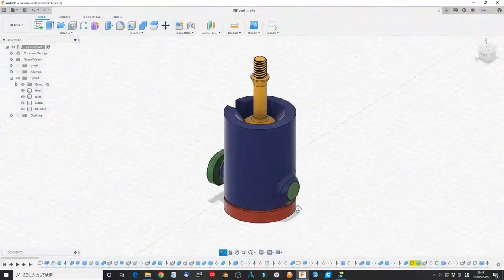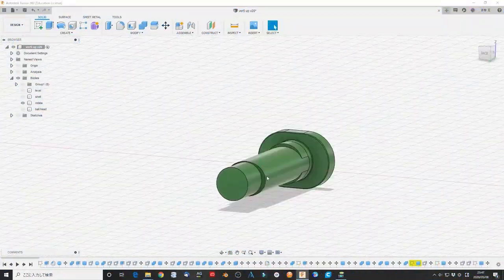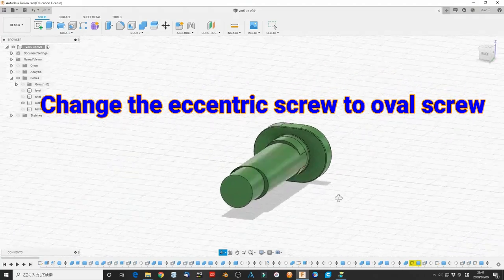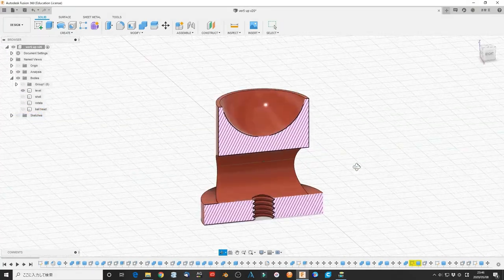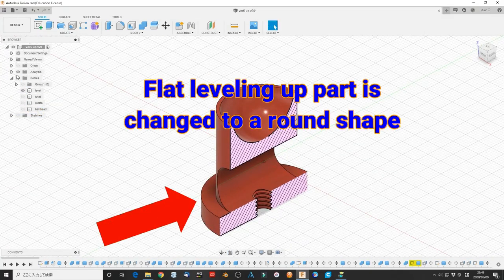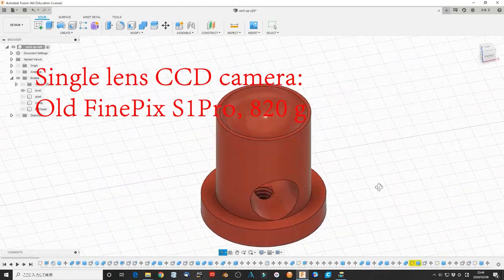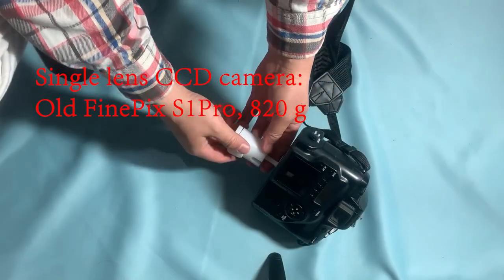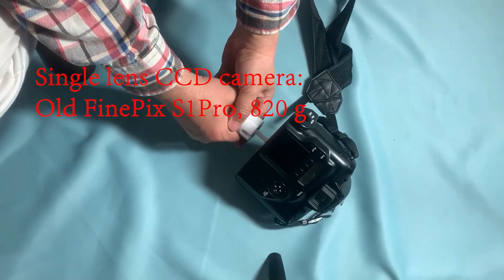I also made some modifications. I changed the eccentric screw to an over screw. Also, the flat leveling part is changed to a round shape. The printing is smooth without any problem.